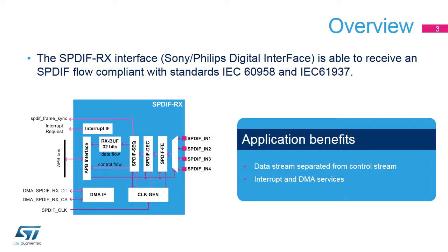The SPDIF-RX needs two peripheral clocks: an APB clock for the register interface accesses, and a kernel clock named SPDIF-CLK, used for the resampling and processing of the incoming stream. The receiver part is mainly composed of the SPDIF-FE, which performs the sampling, the filtering, and the edge detection of the incoming stream.